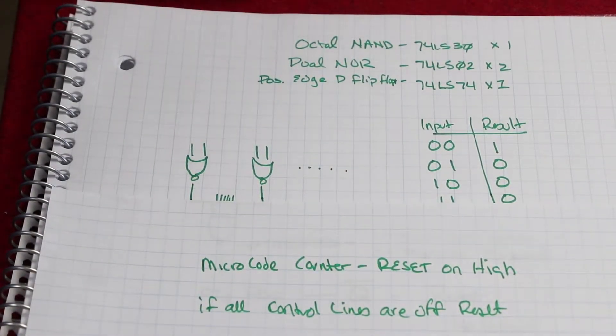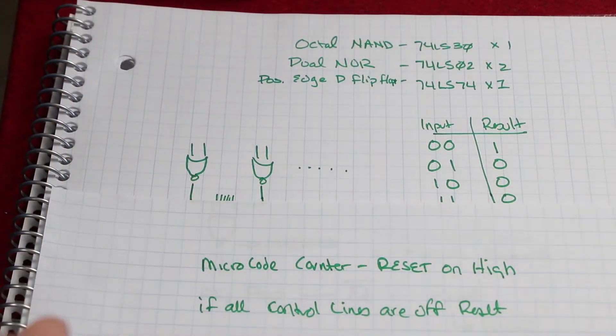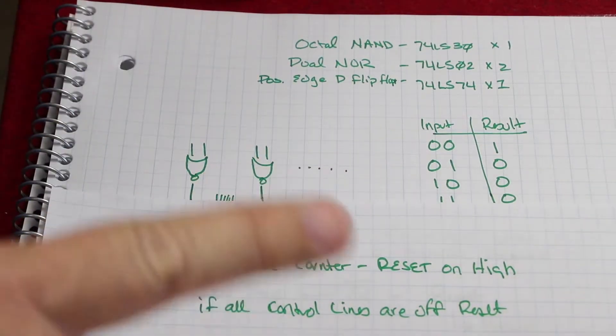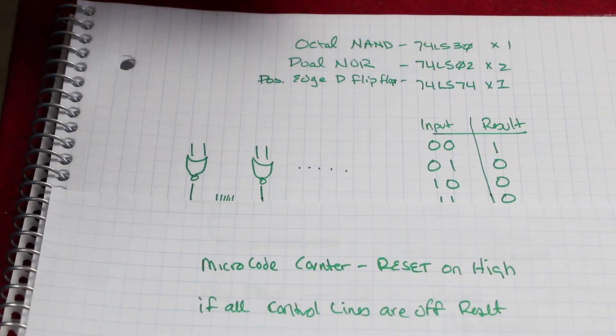Loan Registry here. Today we're going to talk about the microcode instructions and the microcode counter. Right now we know that we have two instructions that we have to load for each instruction, which handles the program counter and loading the instruction into the instruction register.